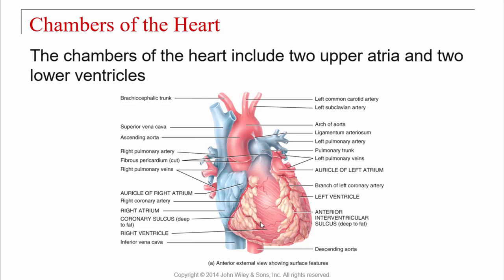From the right atrium, blood goes into the right ventricle. When the right ventricle contracts, it pumps blood up into the pulmonary trunk. There's a structure called the ligamentum arteriosum. When we talk about fetal heart anatomy, we'll discuss how this was originally a tube in a fetus that allowed blood to bypass the lungs — since as a fetus you don't need your lungs — going straight into the aorta and out to the body.